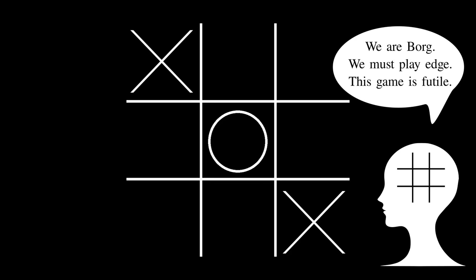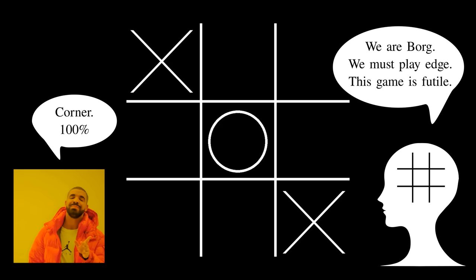Against a perfect opponent, it's just one way of reaching the inevitable draw. Against an imperfect opponent though, there's a decent chance that they'll fall into the trap of playing one of the remaining corners.